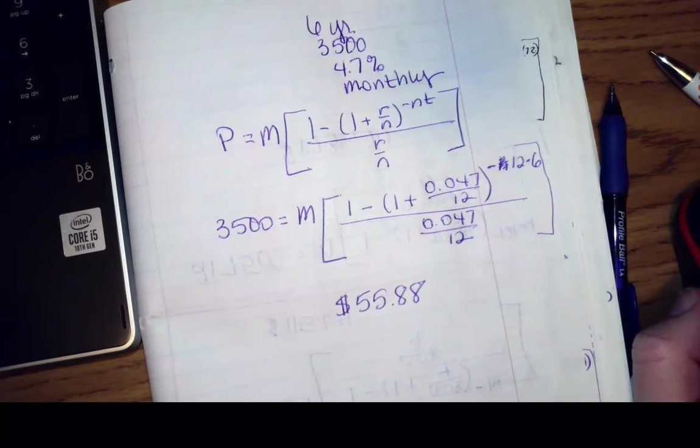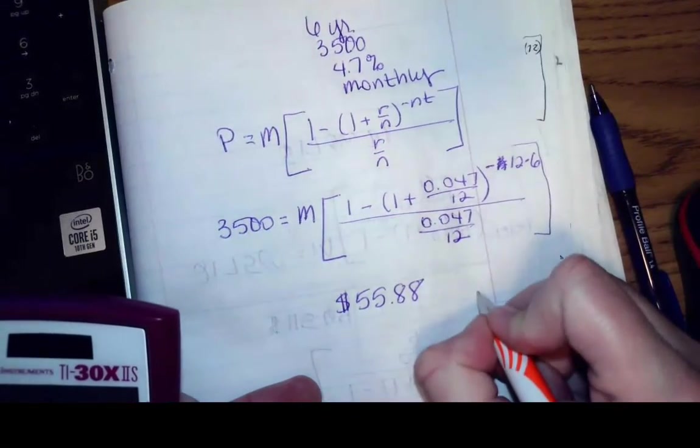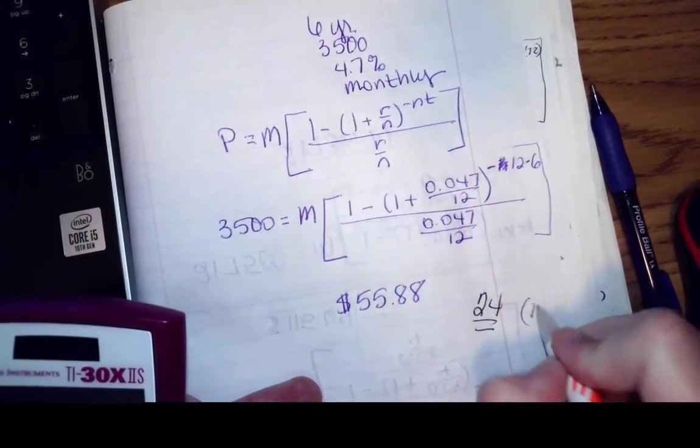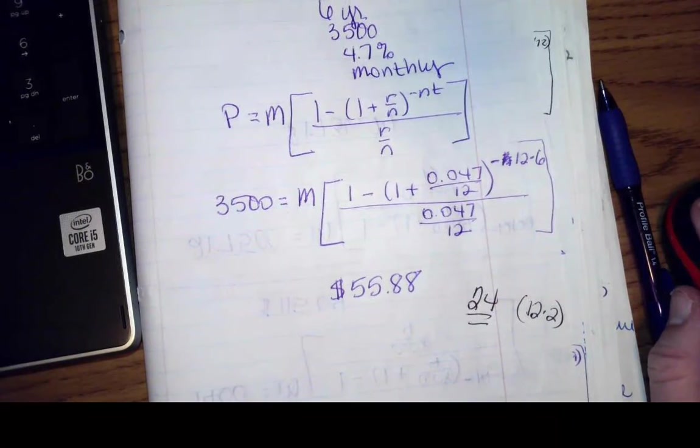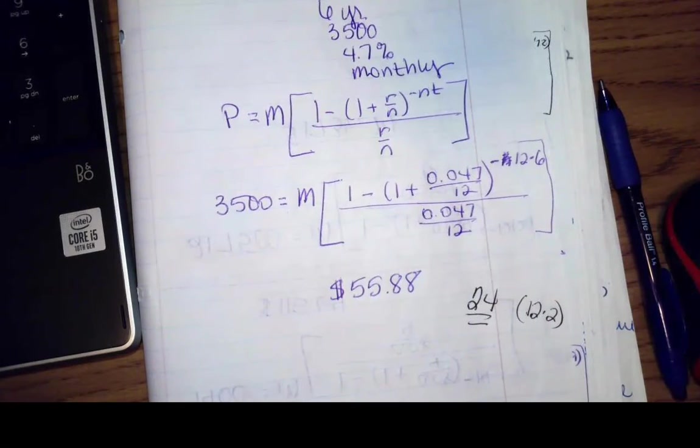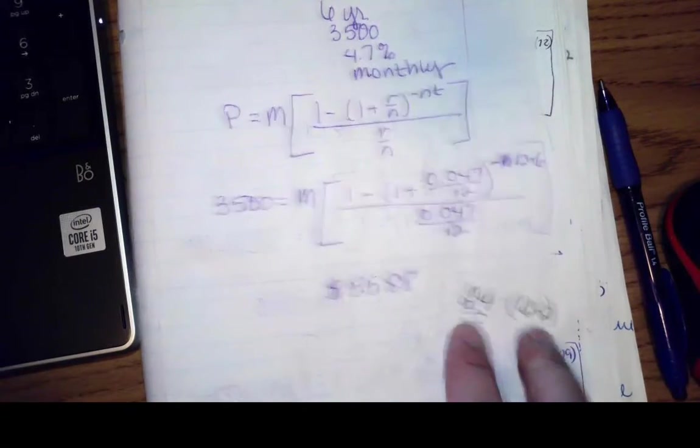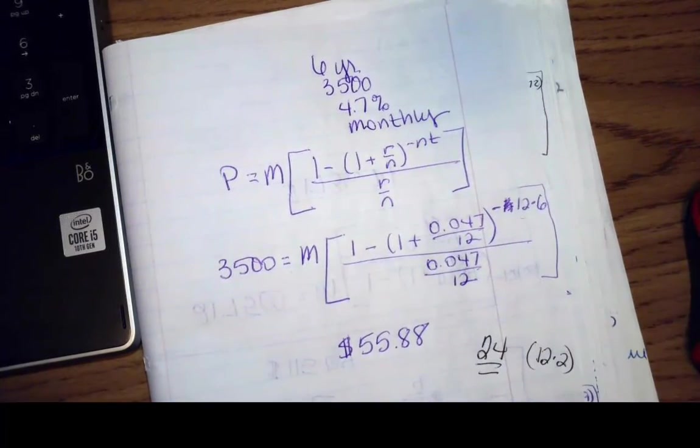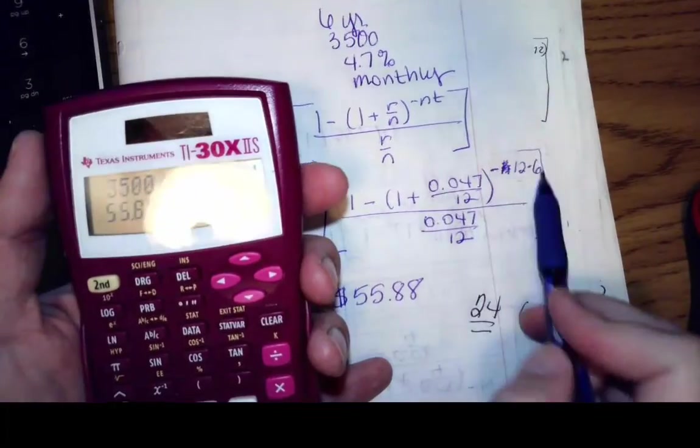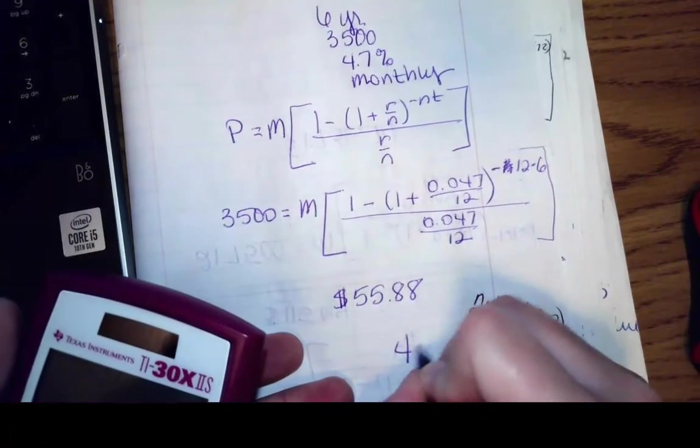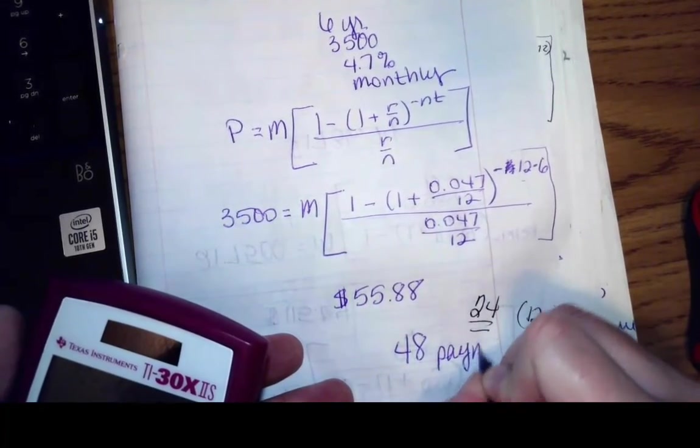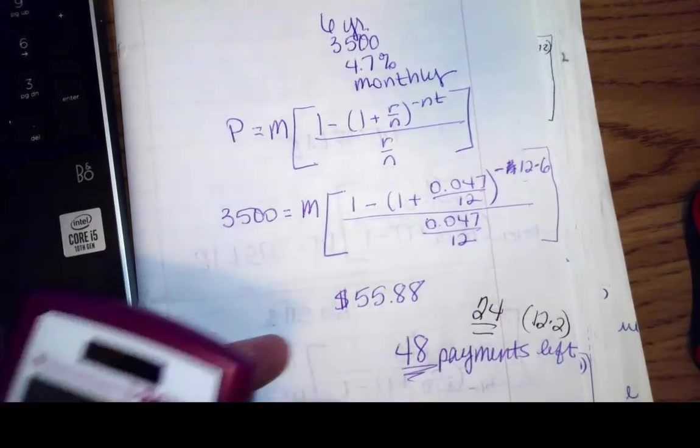Now, what I need to know from here is what's going to be left at the end of 2 years. So at the end of 2 years, that means I've made 24 payments because it's 12 payments per year for 2 years. So what am I going to do from here? What we are going to do is calculate what's left on the loan. So what's left on the loan, I've already paid 24. How many payments am I making? Well, 12 times 6 is 72. I'm supposed to make 72 payments. So 72 payments minus the 24 payments I've already made is I've got 48 payments left.